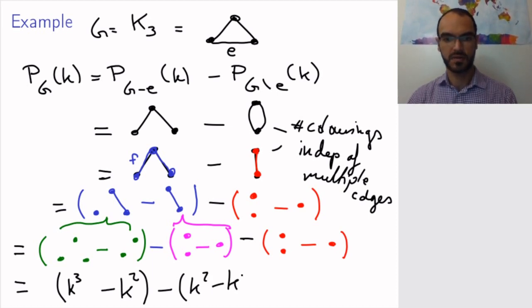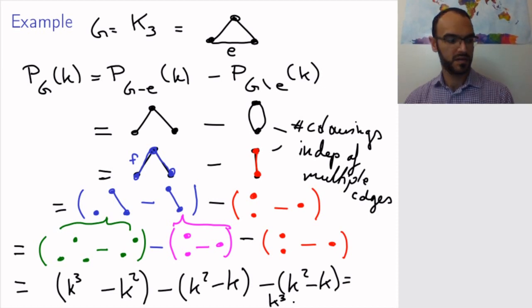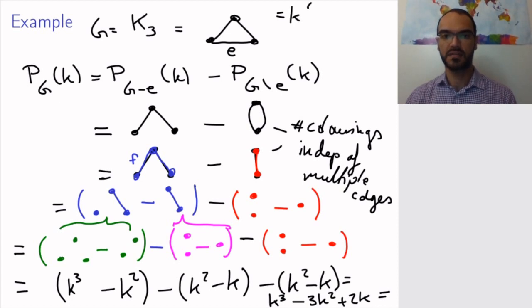So this is k^3 minus k^2 plus two k. And if you simplify it further, or if you factor it rather, you get k times (k minus 1) times (k minus 2), so I'm continuing up here.